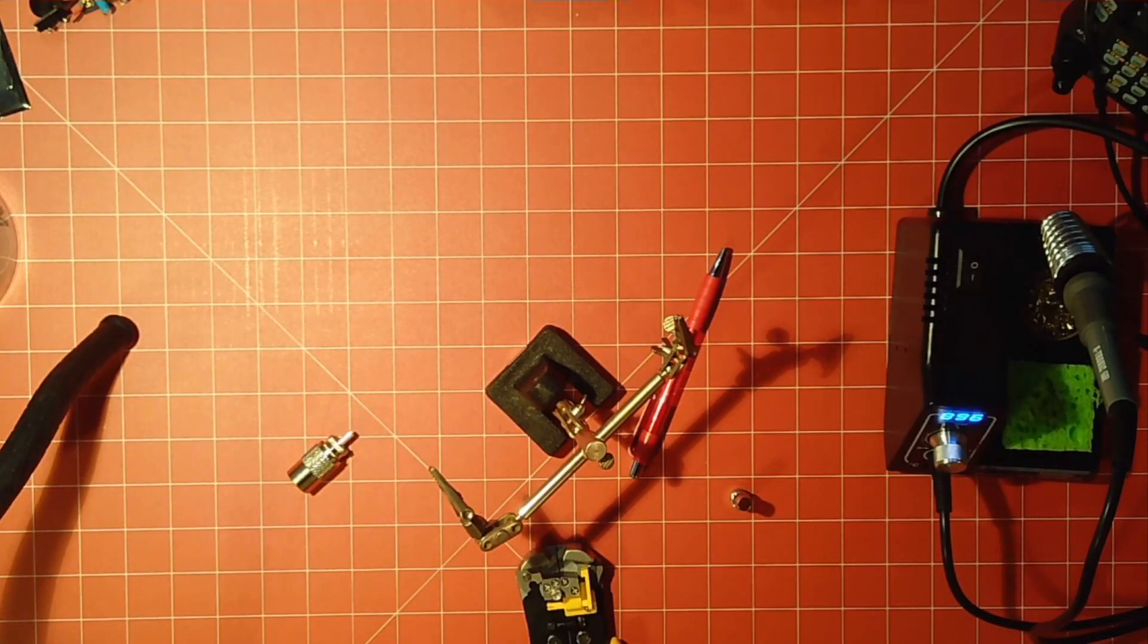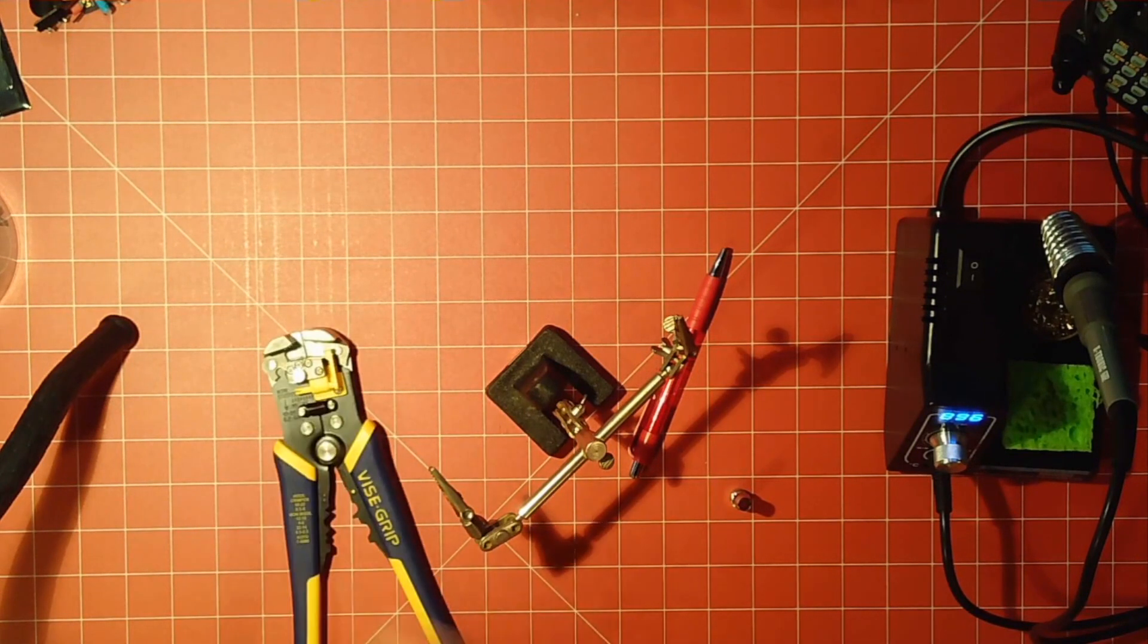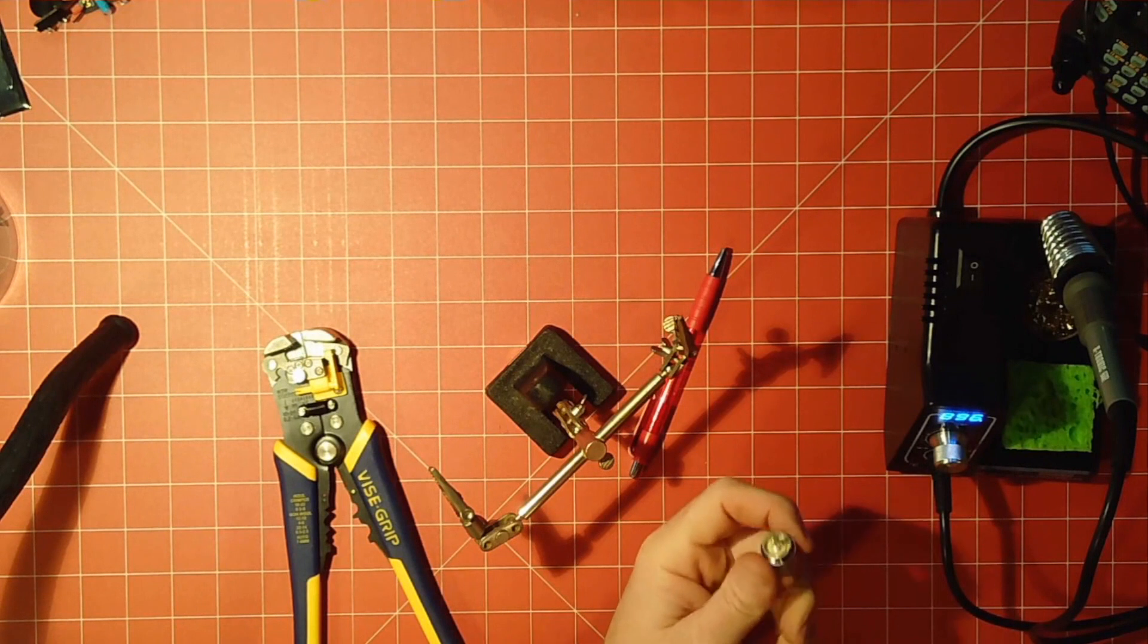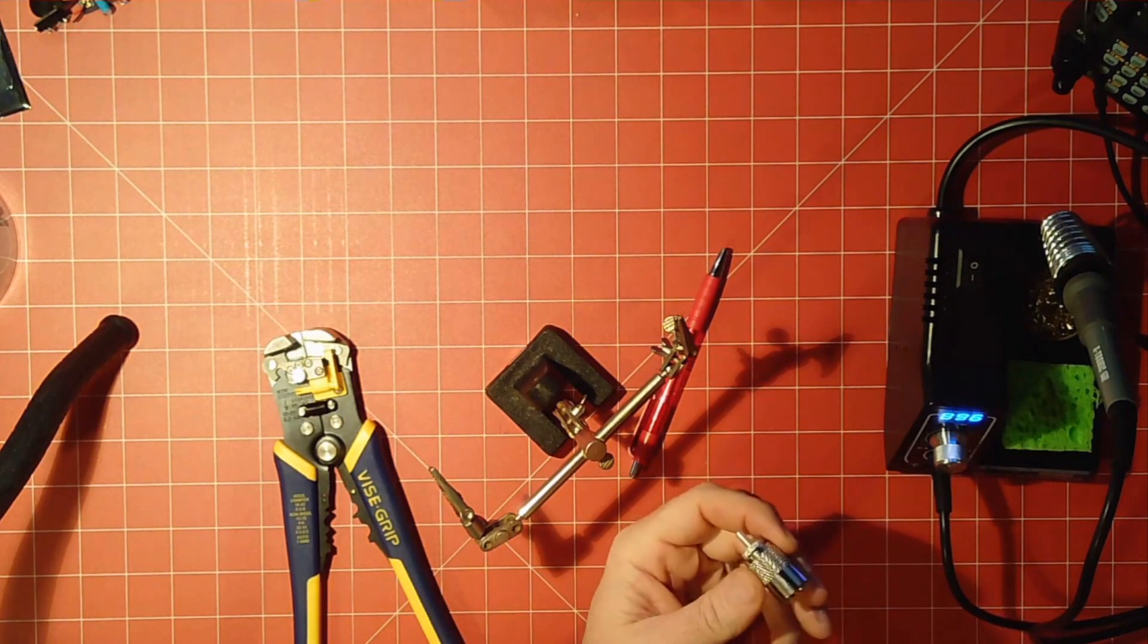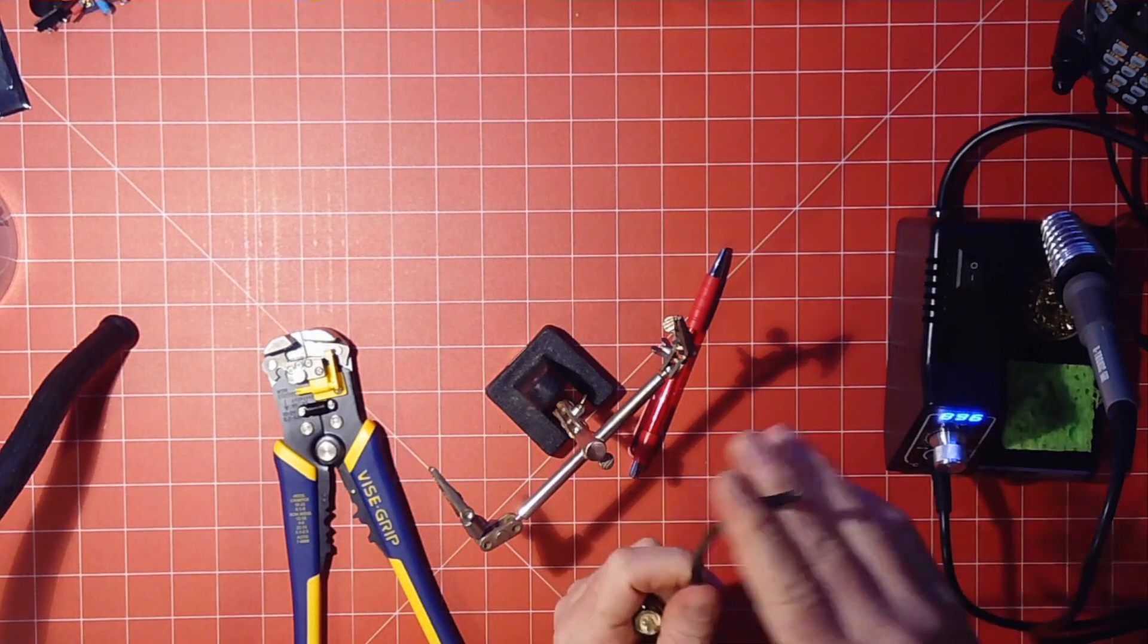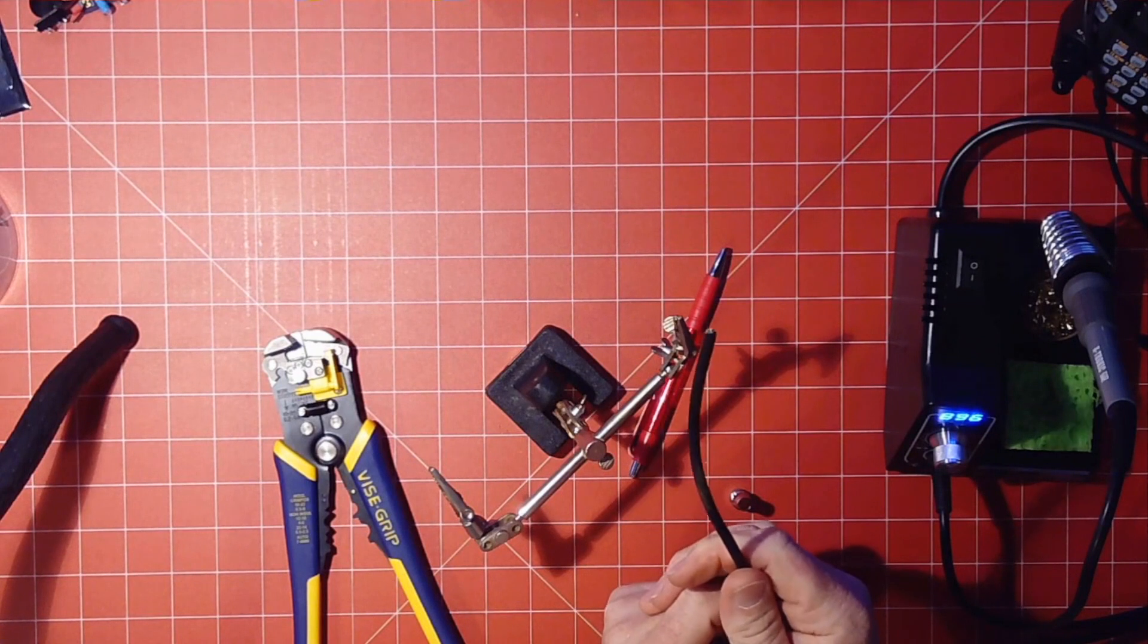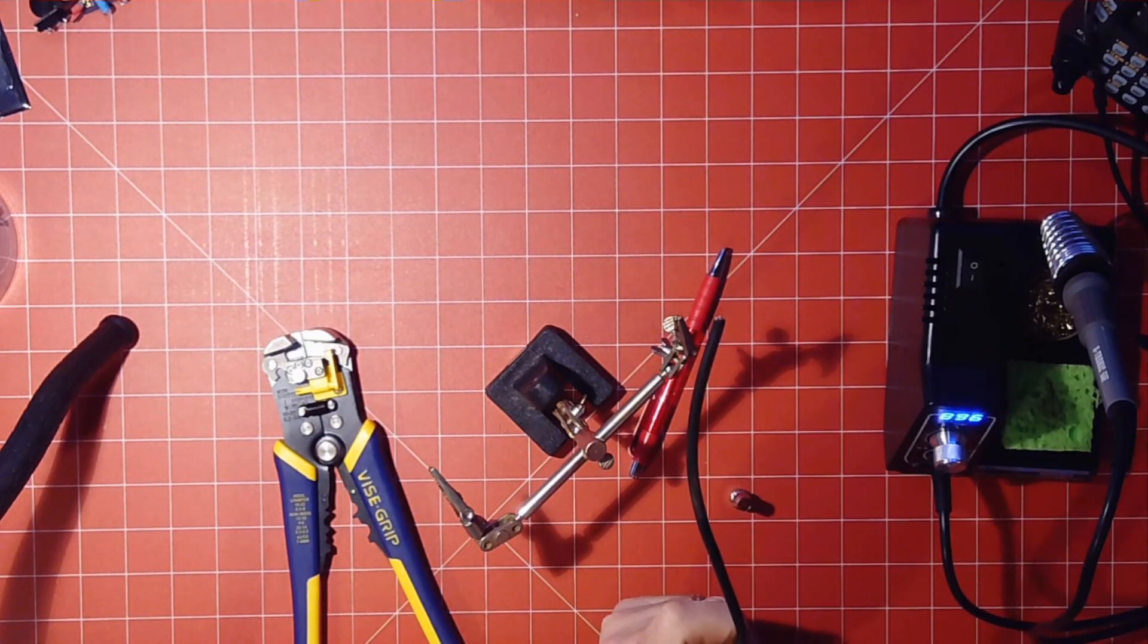Okay, so one of the things that we need to know how to do is how to solder a PL259 connector onto coax. Now, the coaxial cable, or the coax, is what you run from your antenna to your radio.